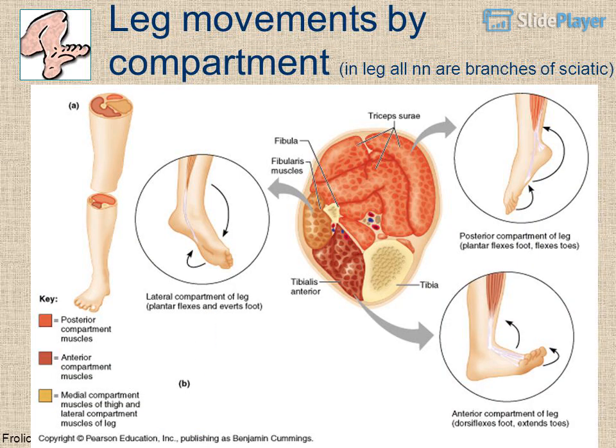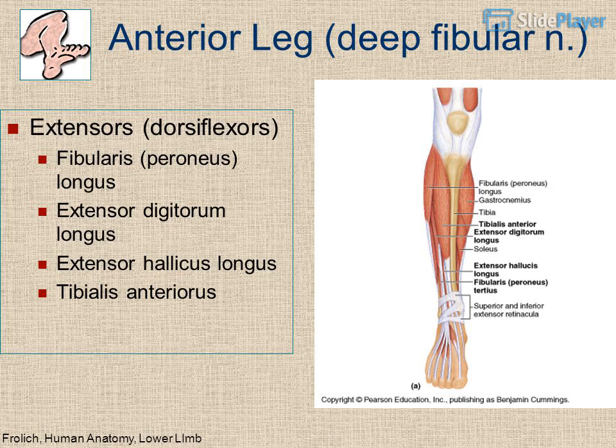Leg compartments: all nerves in the leg are branches of the sciatic. Anterior leg: deep fibular nerve — extensors/dorsiflexors including fibularis (peroneus) longus, extensor digitorum longus, extensor hallucis longus, and tibialis anterior. Lateral leg: superficial fibular nerve — fibularis brevis and longus. Posterior leg: tibial nerve — flexors/plantar flexors including gastrocnemius, soleus, flexor digitorum longus, and flexor hallucis longus.